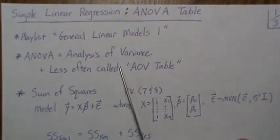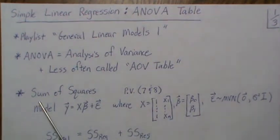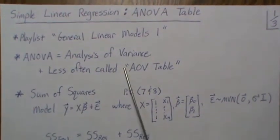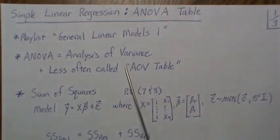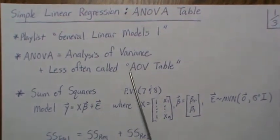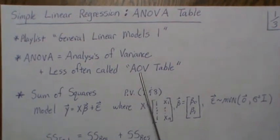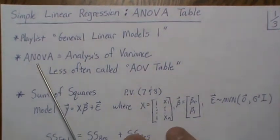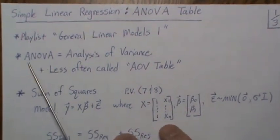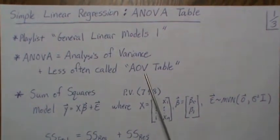In a previous video we derived the sums of squares, we partitioned it, and then all the little pieces of variability are put into this Analysis of Variance table. It's sometimes called an AOV table, but almost always called ANOVA table.